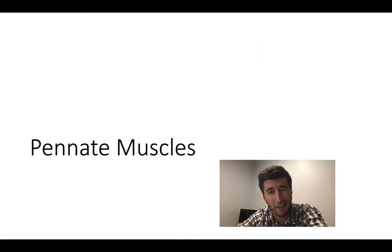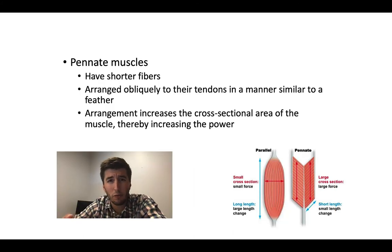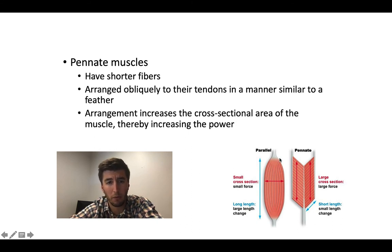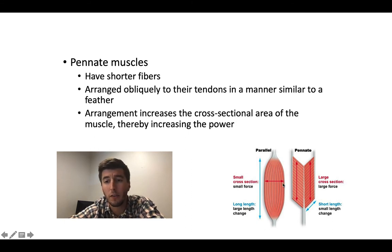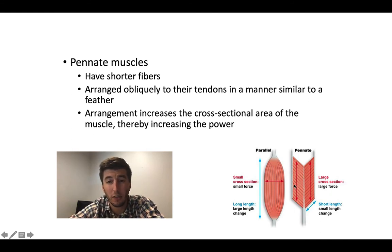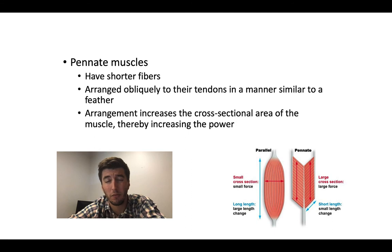Pennate muscles are where we get into more fun muscle groups because they actually exert quite a bit more force. Pennate muscles have shorter muscle fibers that run obliquely to the tendons. If we look at a parallel muscle, it runs the entire length from tendon to tendon. Pennate muscles, by contrast, have this shorter oblique angle, which increases the cross-sectional area of the muscle. And if we increase the cross-sectional area, we increase the potential for force production.